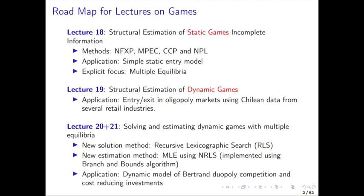If you estimate the CCPs or best response functions in the first step, you can basically reduce the problem of estimating a game to estimating a single-agent model, once you have uncovered which equilibrium was played in the data — estimated as the fraction of times each player was investing. The CCP estimators are subject to finite sample bias, and so even though the method is consistent, in finite samples the sample analog of the conditional choice probabilities could give rise to bias when estimating the structural parameters. The nested pseudo-likelihood algorithm can be used to improve efficiency.